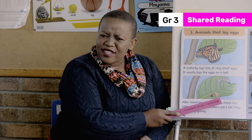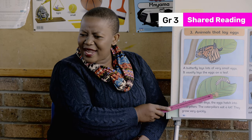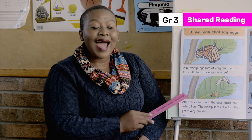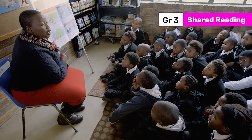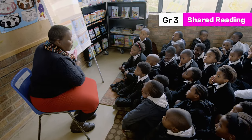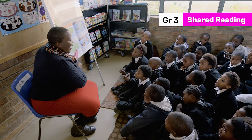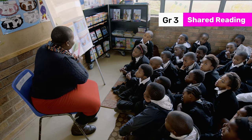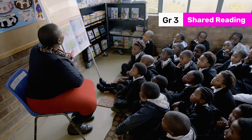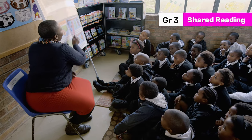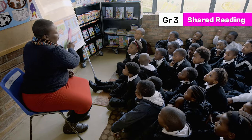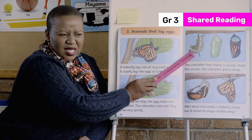Do you guys know what we call that in English? There's a word we use for that — hatch. What do we say? It hatches out of the egg. The caterpillar hatches out of the egg. Then what do you think is happening in this picture?